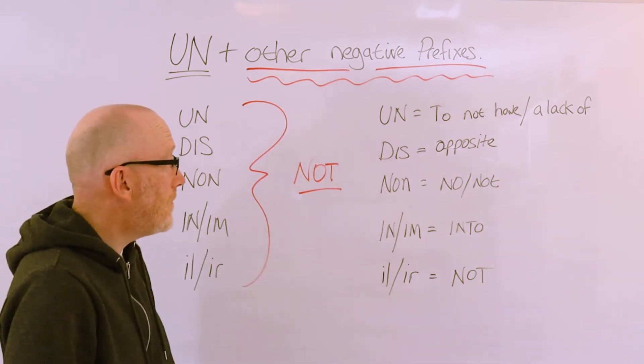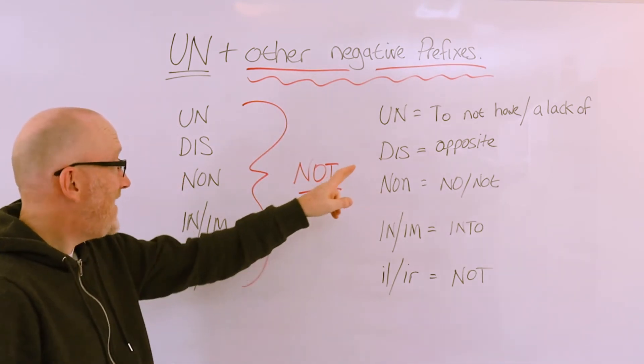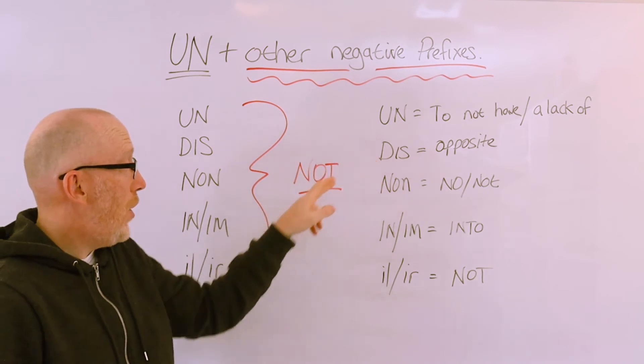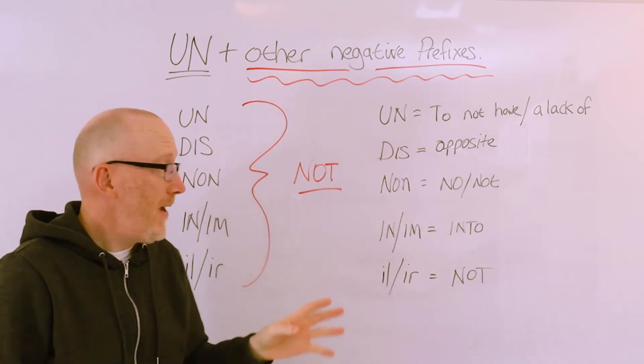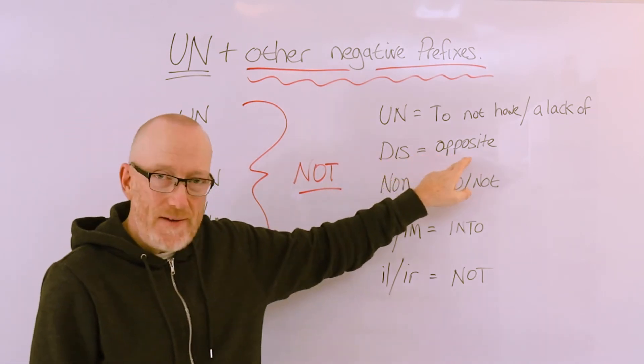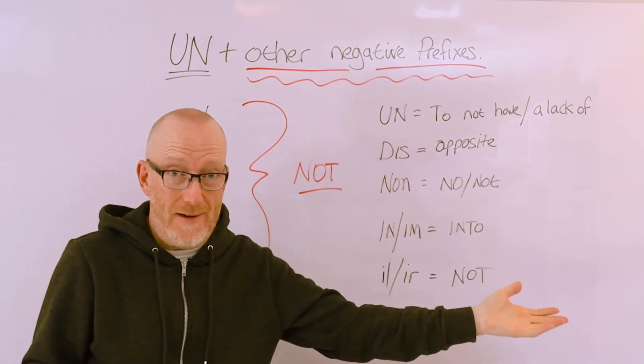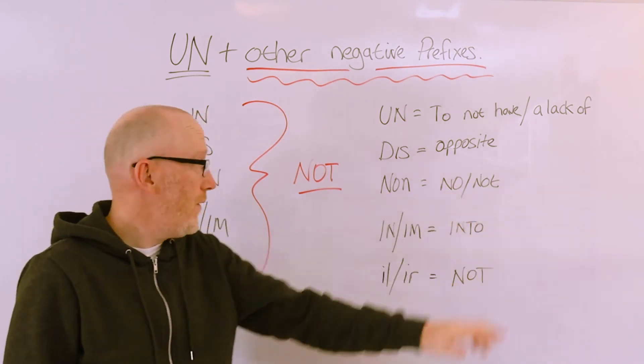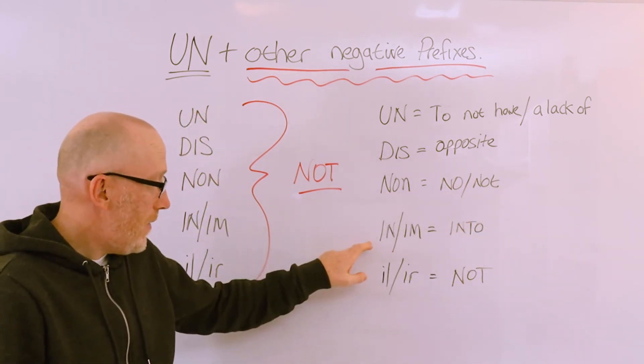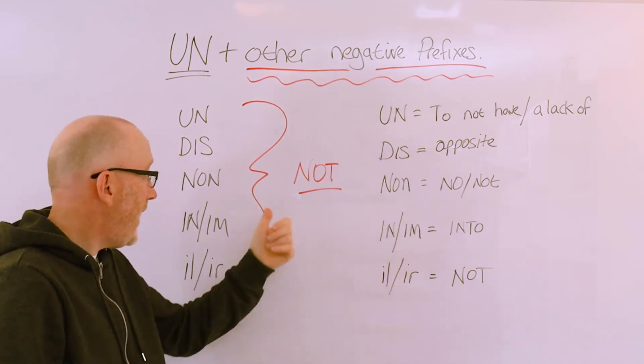DIS, although it means not, more accurately means the opposite of what you have. NON is an easy one because it literally means either no or not. And IN or IM, as well as being negative, can also mean into something.